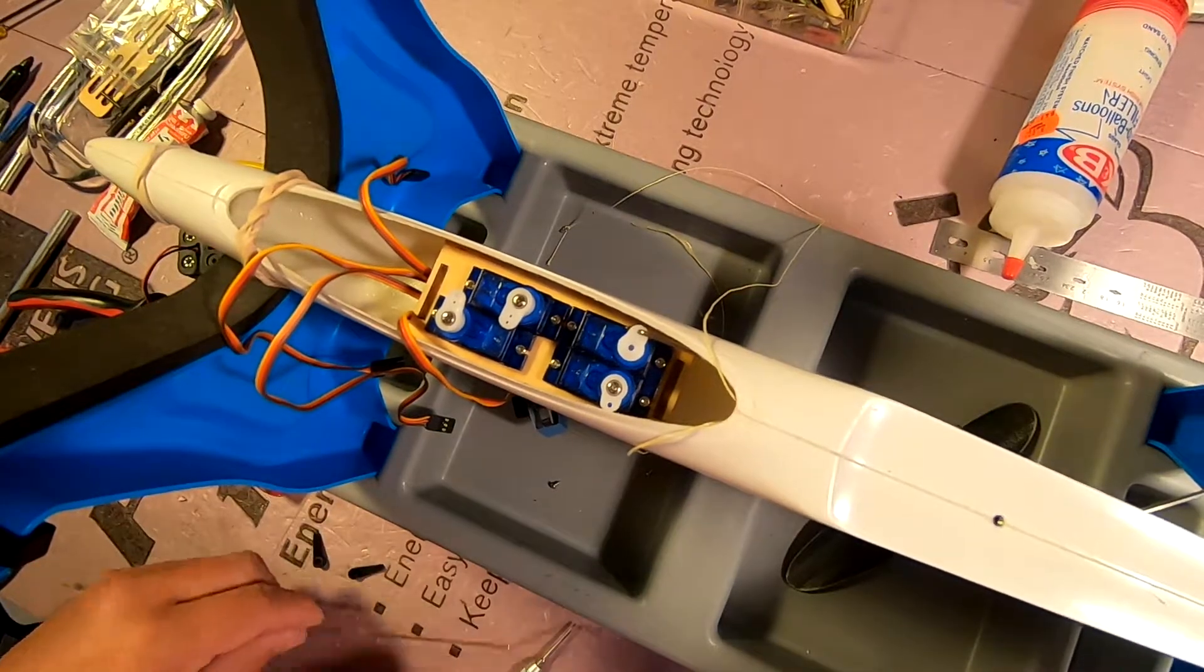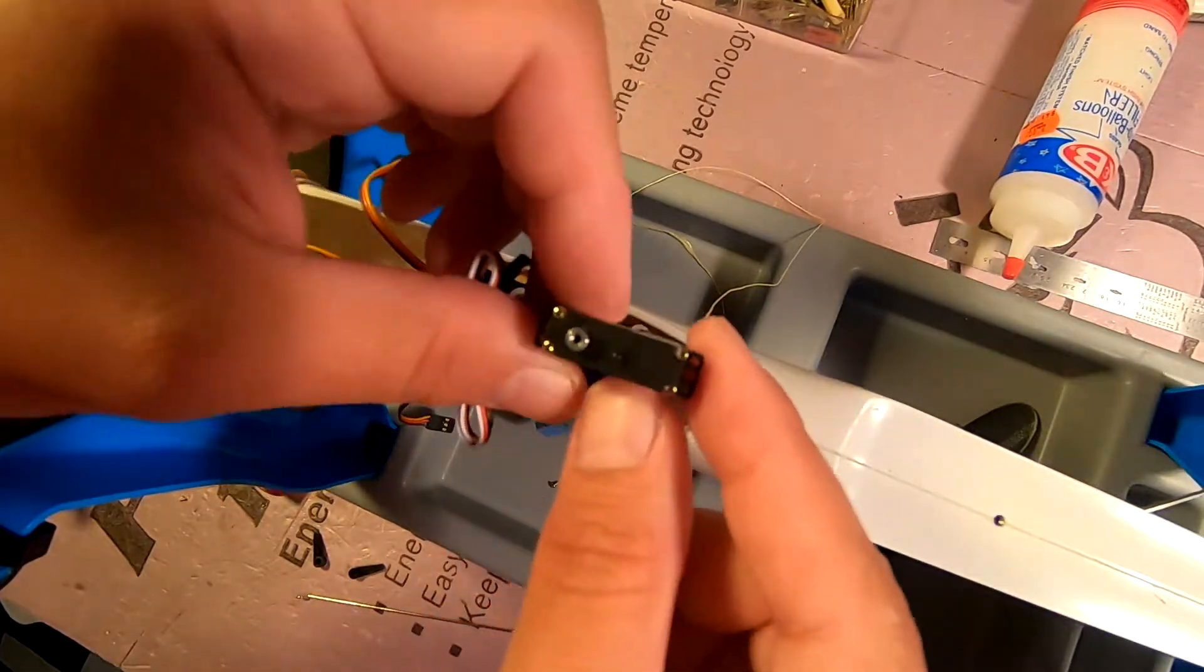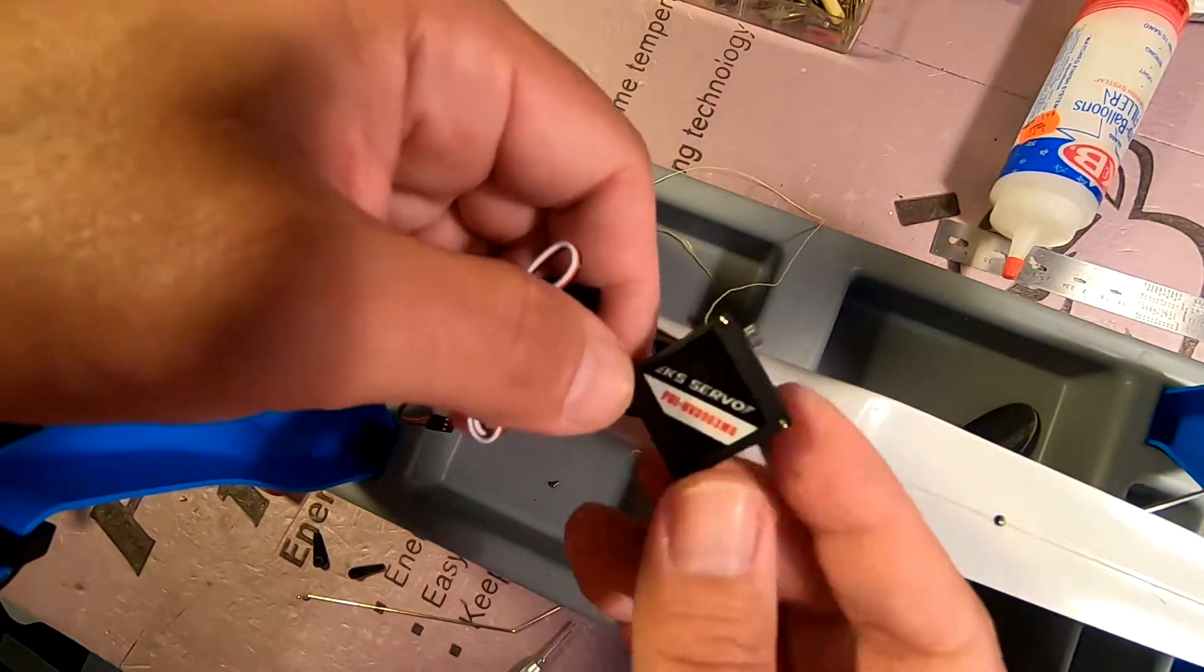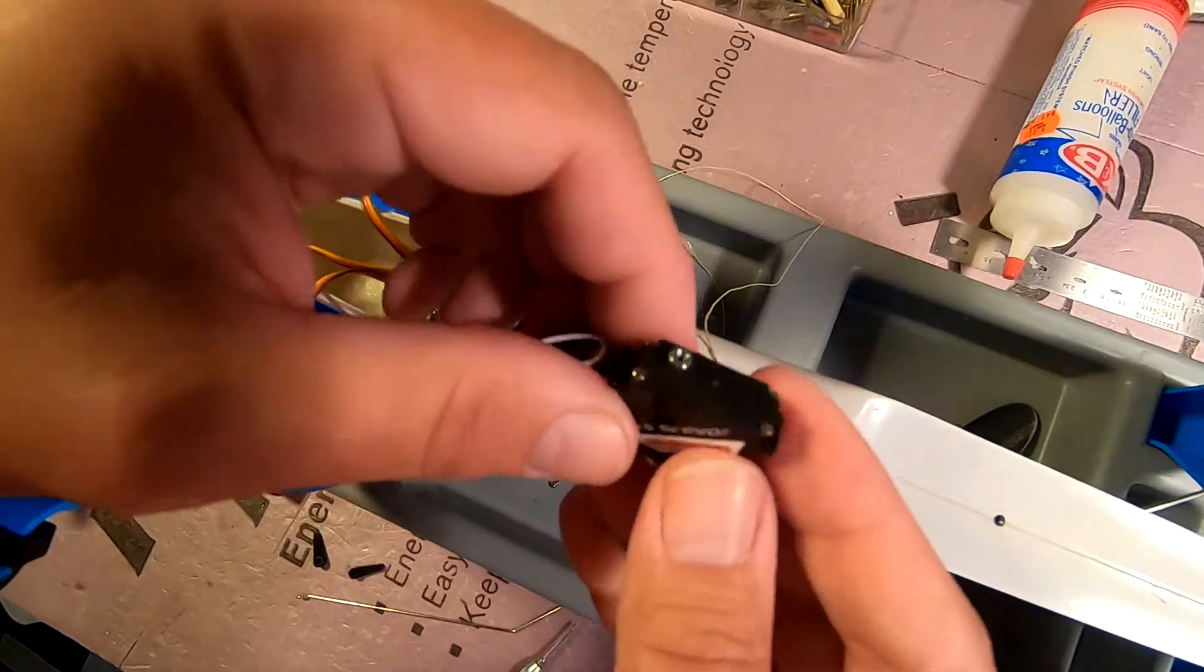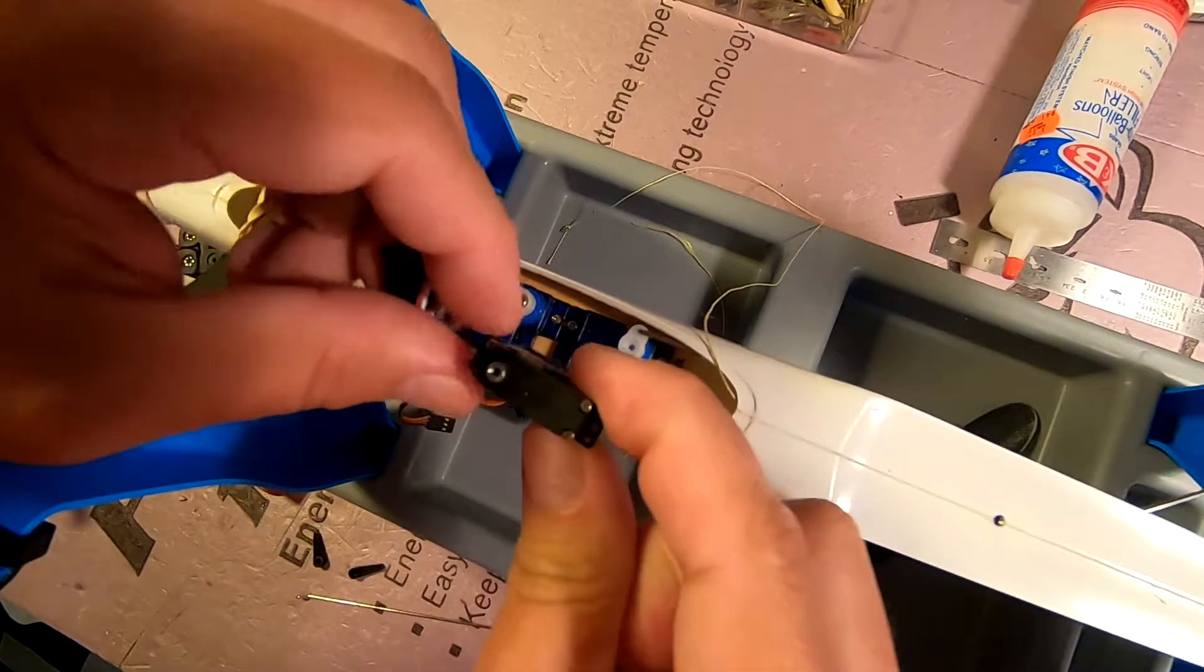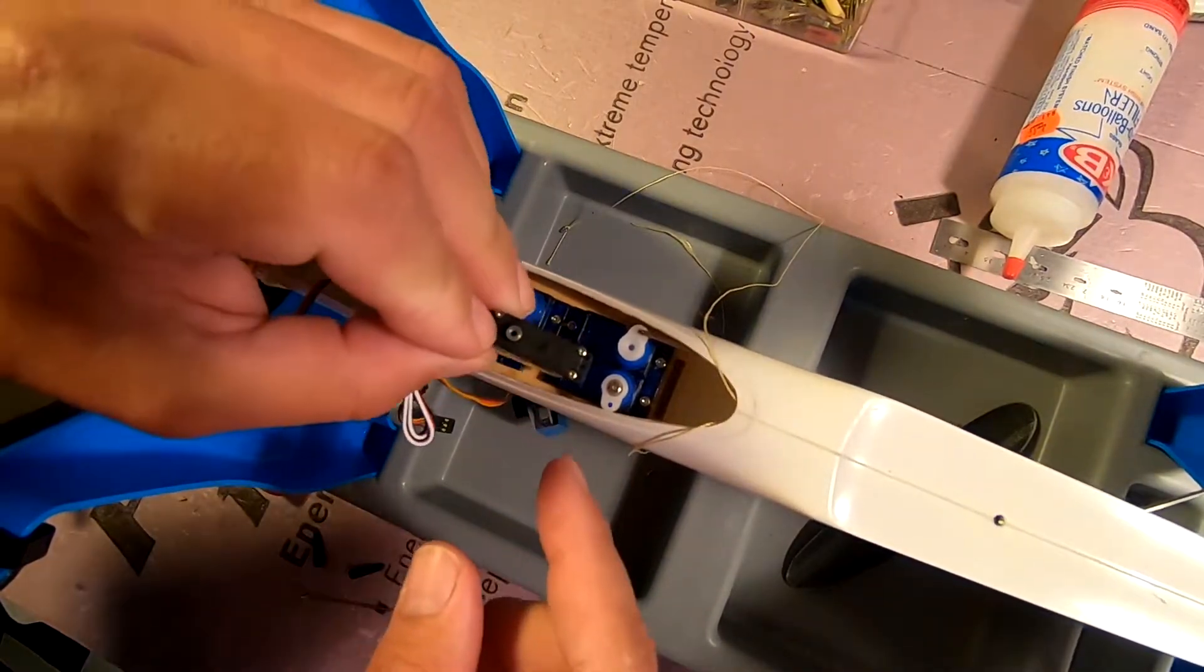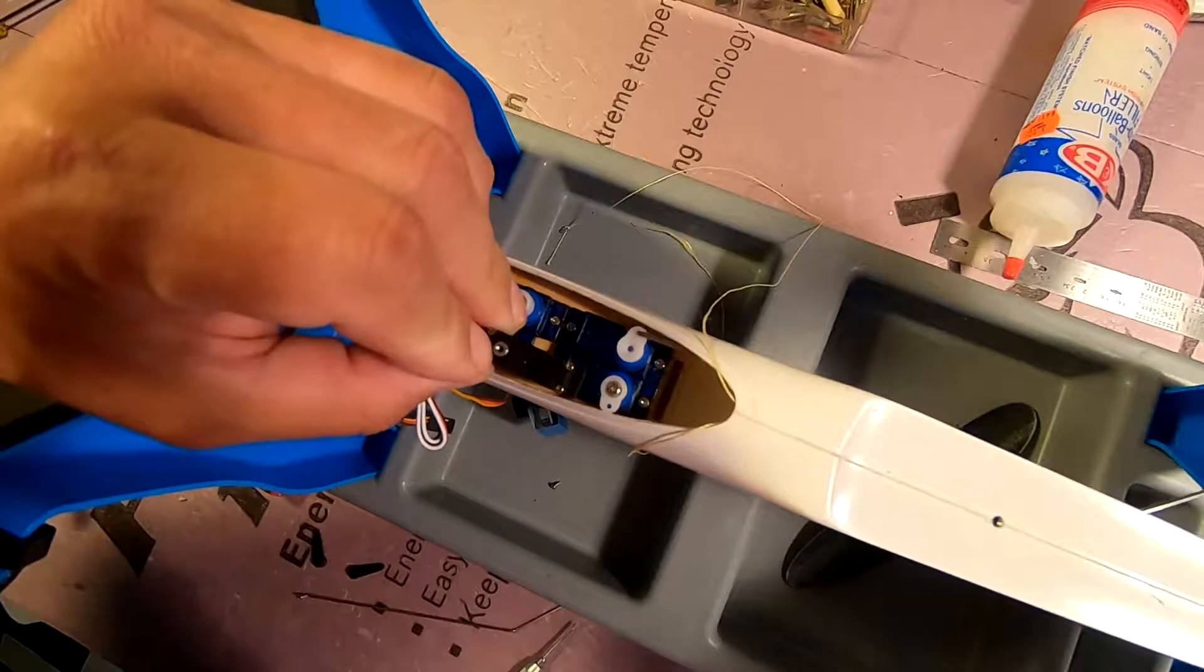Another option I have is to replace these two servos with a pair of these. I showed these previously in an unboxing video - these are very small metal geared servos. They're very high speed and reasonably high torque. They're undoubtedly stronger than these, and as you can see they are about a third as wide.